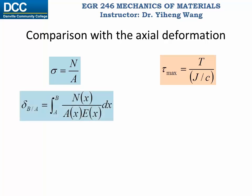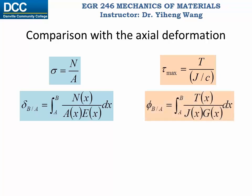The axial deformation delta of B relative to A — the displacement of one end relative to the other — equals the integration of N, the internal normal force, over A times E, Young's modulus, integrated from end A to end B. The angle of twist of end B relative to A similarly equals the integration of T, the internal torsional moment, over J — the polar moment of inertia, analogous to area — times G, the modulus of rigidity analogous to Young's modulus — integrated from end A to end B.